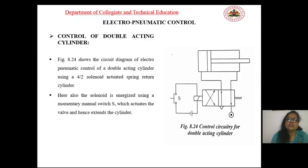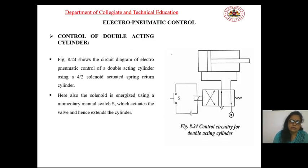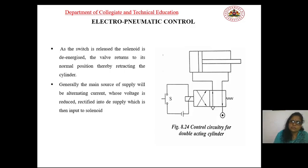The figure shows the circuit diagram of electro-pneumatic control of a double-acting cylinder. In the double-acting cylinder, the electro-pneumatic control uses a 4/2 solenoid-actuated spring-return valve. The solenoid is energized using a momentary manual switch S, which activates the valve and extends the cylinder. As the switch is released, the solenoid is de-energized, the valve returns to its original position, thereby retracting the cylinder. The main AC supply is rectified into DC supply, which is input to the solenoid.